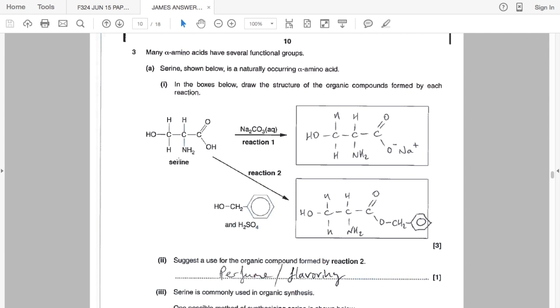So the reactions of serine. Serine is going to react with sodium carbonate solution and form this salt here. So we have O minus Na plus. Make sure that there's no bond between the O and the Na, otherwise that would be marked wrong.